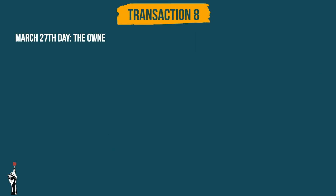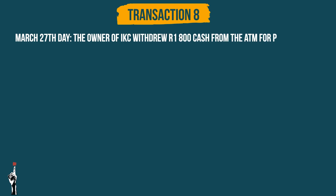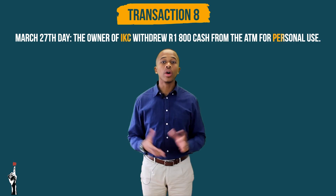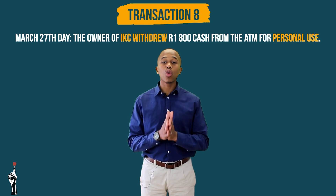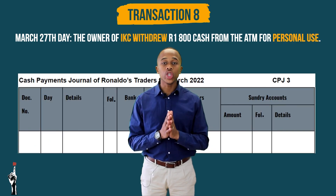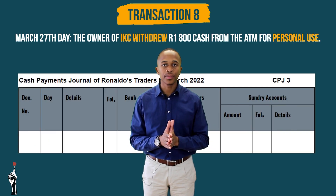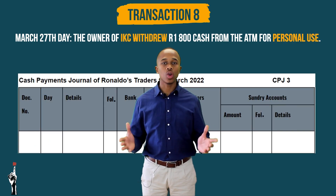The owner of IKC withdrew 1,800 Rand cash from the ATM for personal use. This is of course a CPJ transaction and it goes as follows.